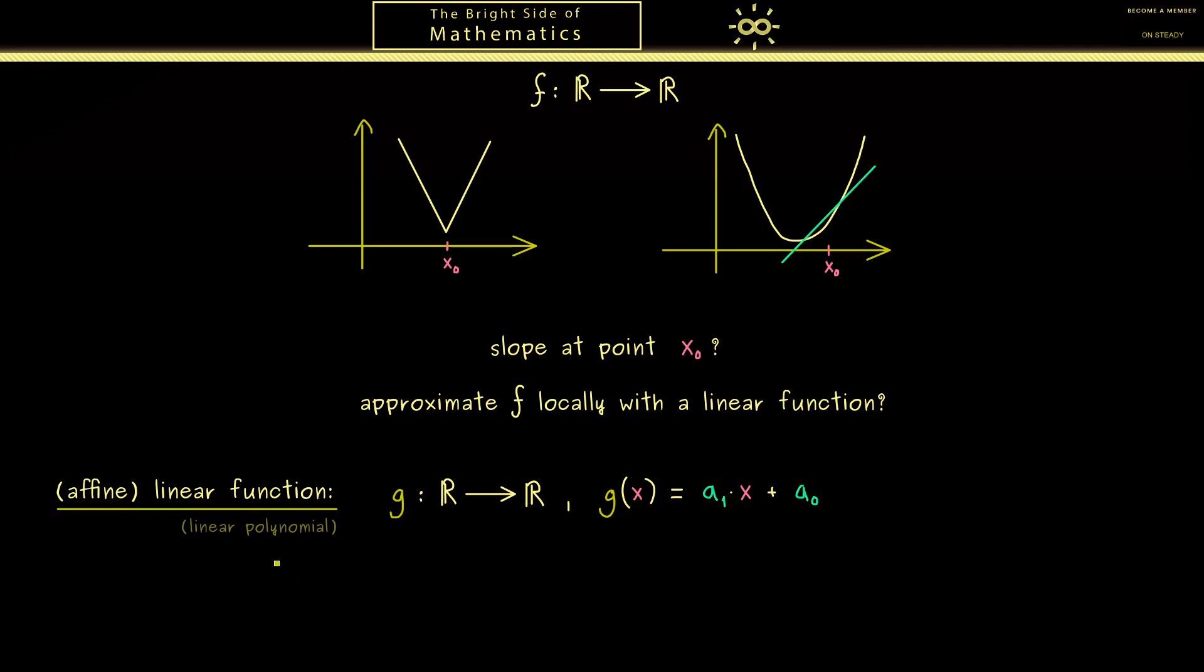In other words it's a polynomial where we only have two coefficients involved. In addition then also the graph looks very simple, because it's just a straight line. Now it's not hard to see that the slope of this graph is exactly the number a1.